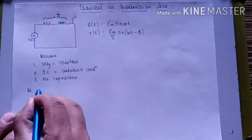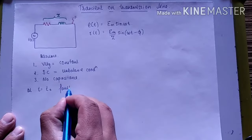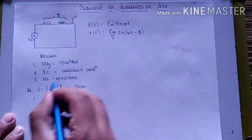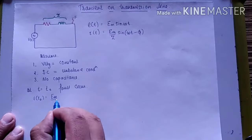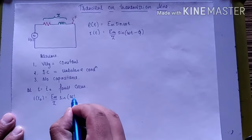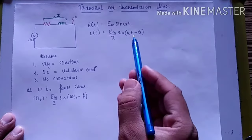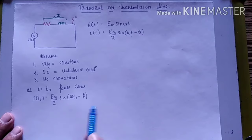At t = t₀, the fault occurs. So the value of I(t₀) = (Em/Z)·sin(ωt₀ − φ). This is the point where the fault occurs.